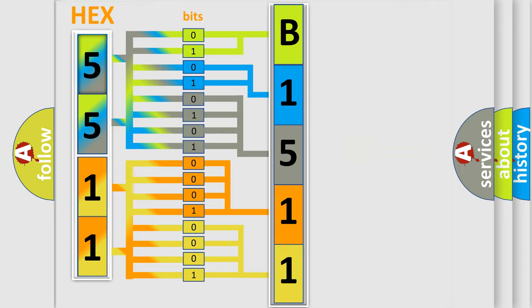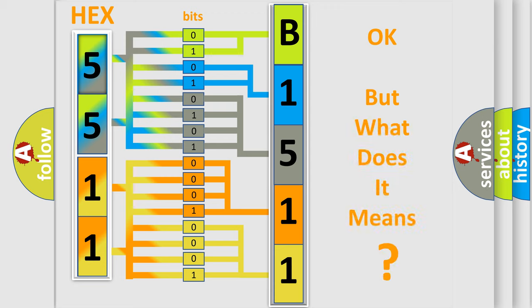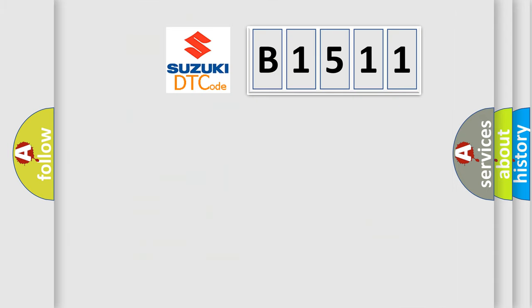We now know in what way the diagnostic tool translates the received information into a more comprehensible format. The number itself does not make sense to us if we cannot assign information about what it actually expresses. So, what does the Diagnostic Trouble Code B1511 interpret specifically for Suzuki car manufacturers?